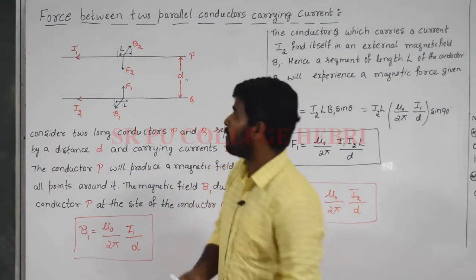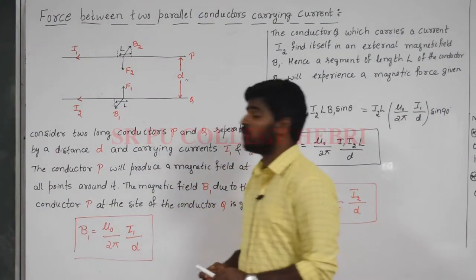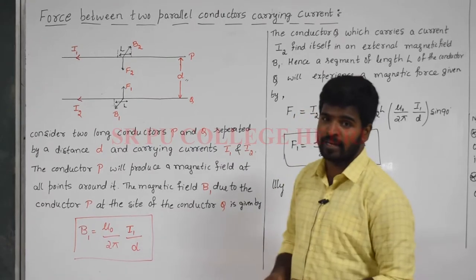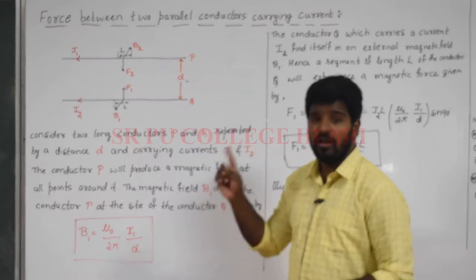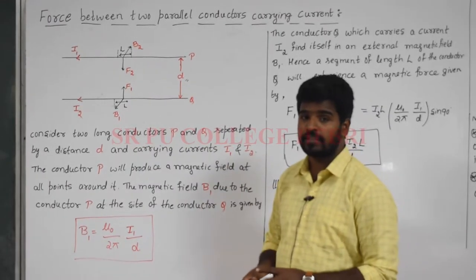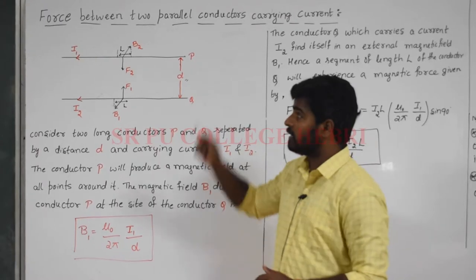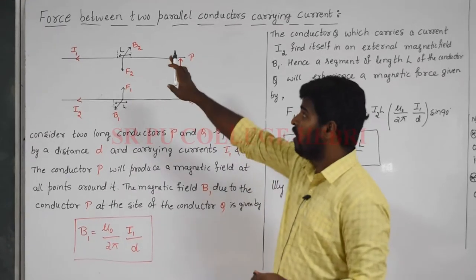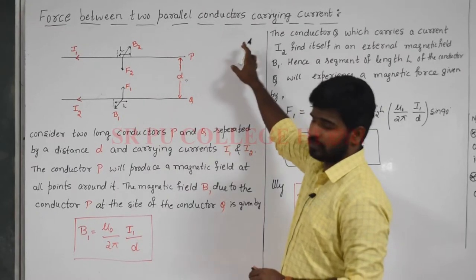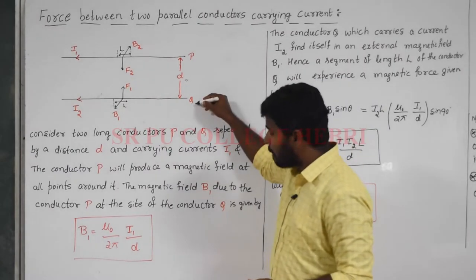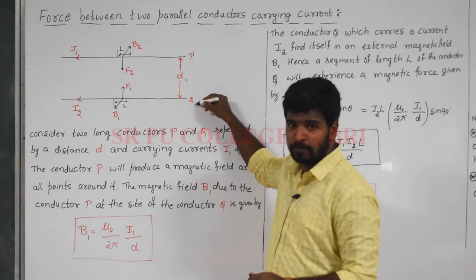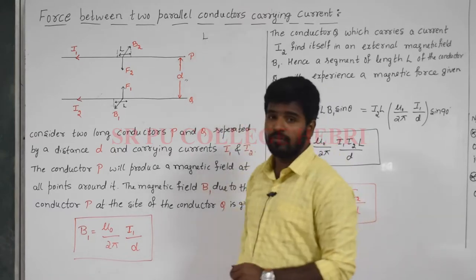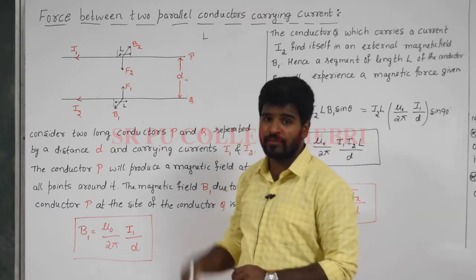Hello friends, in this session we will start with the concept of force between two parallel conductors carrying a current. Along with that, one more definition is the definition of one ampere. An important question is: what is the force between two parallel conductors? Here we have taken two parallel conductors P and Q, each of length L, which means they have the same length.